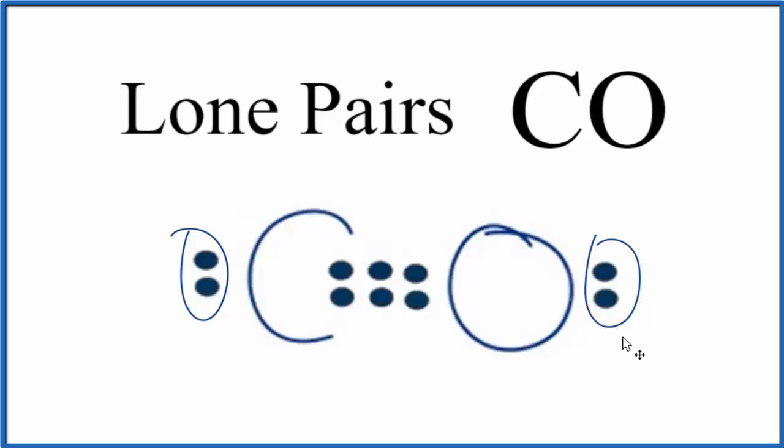We also call them unbonded electrons because they're not involved in chemical bonds. The electrons shared between the carbon and the oxygen, between these atoms, these are called bonded pairs of electrons. These electrons are involved in a covalent bond.